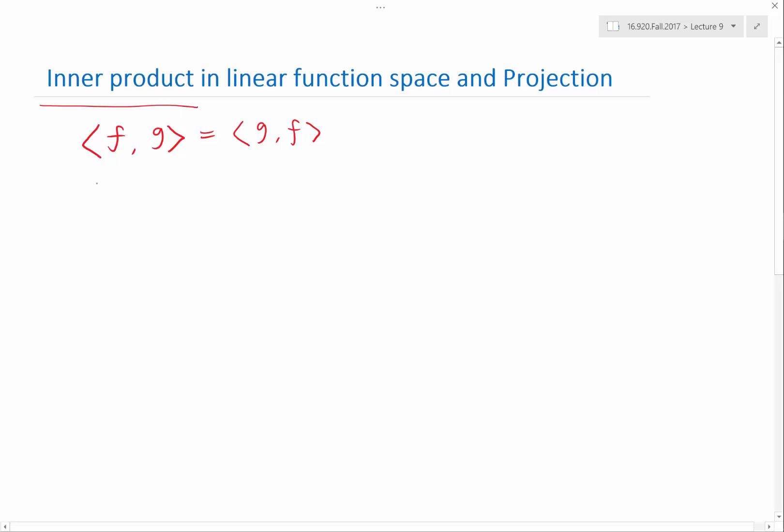You also need to satisfy linearity. So that means if I have a times f with g, it's actually equal to a times f inner product with g. So these properties are the same, exactly the same for functions versus for vector spaces. f1 plus f2 inner product with g has to be equal to f1g plus f2g. This is linearity. And the linearity happens for f, it also happens for g. You can show this by commuting and applying the same properties.